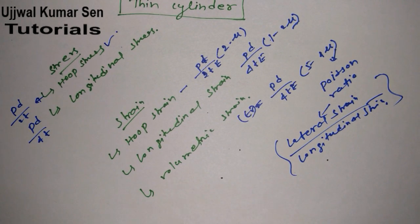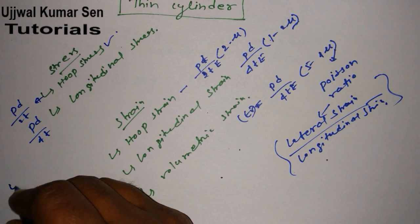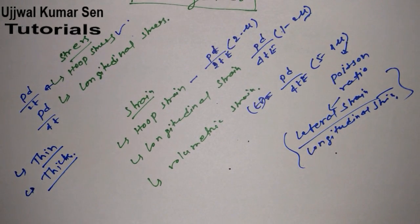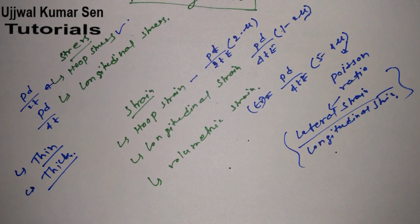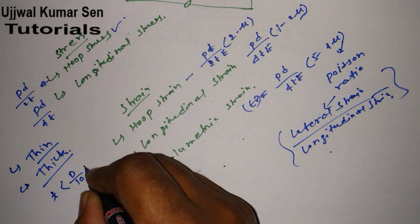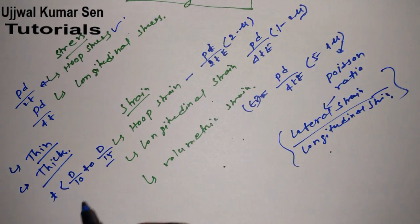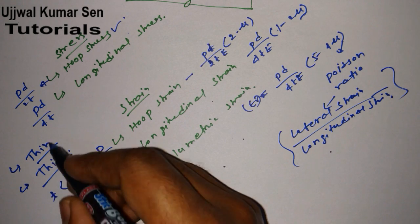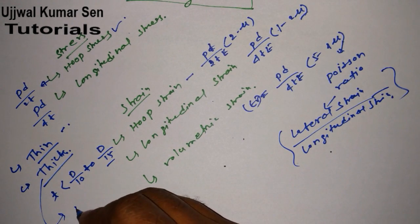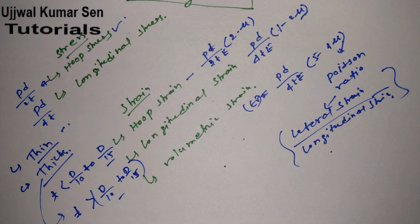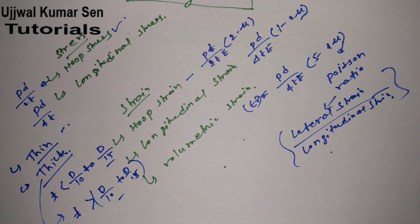There are two types of cylinders: thin and thick. When is a cylinder known as thin and when is it known as thick? If the thickness of the cylinder is less than one-tenth to one-fifteenth of the diameter, it is known as thin. For a thick cylinder it is just the opposite - the thickness is greater than one-tenth to one-fifteenth of the diameter.